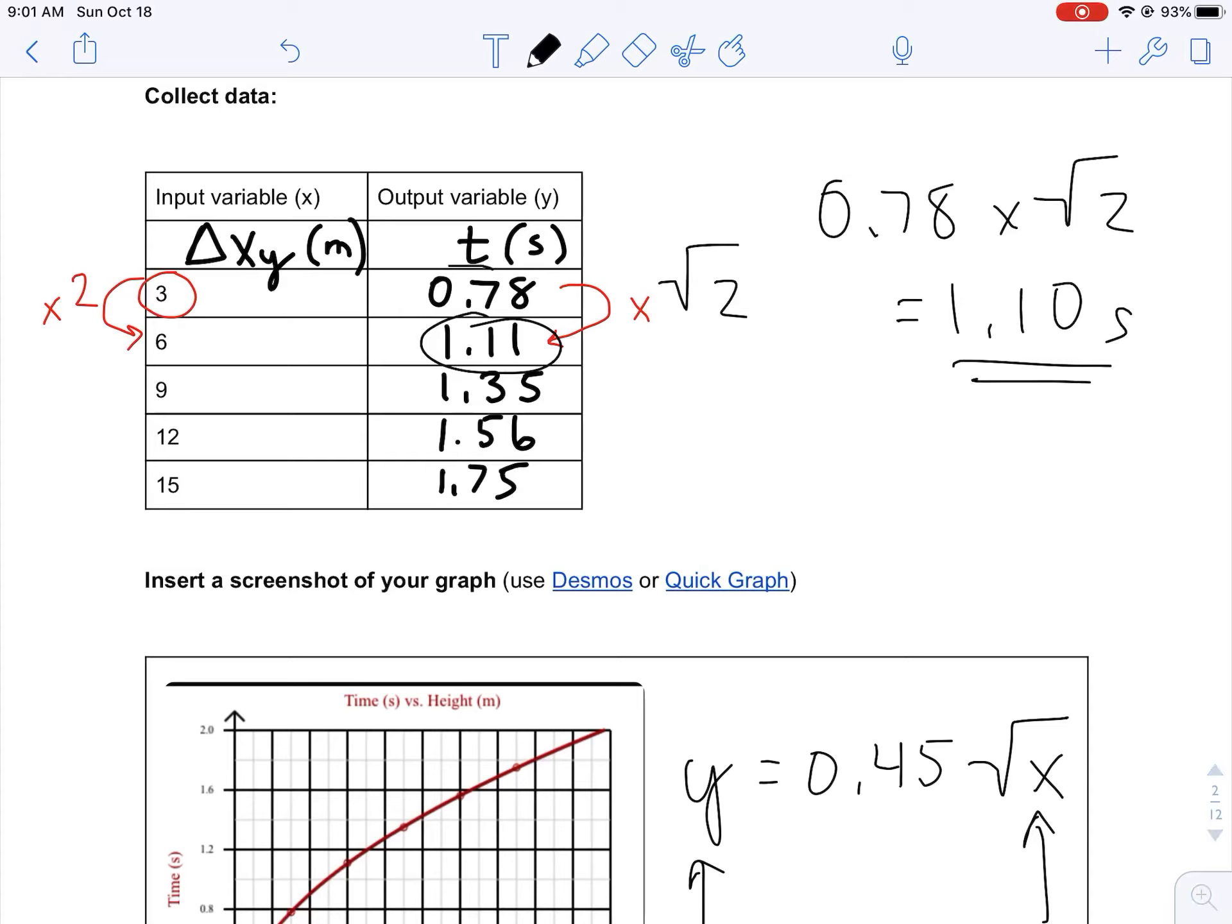That's not exactly 1.11, but it's really close, so there's just a little bit of rounding. When we said the cannonball hits the ground at 0.78 seconds, maybe it was actually 0.776 or something like that. The bottom line is when the input goes up by a factor of two, the output goes up by a factor of square root of two.